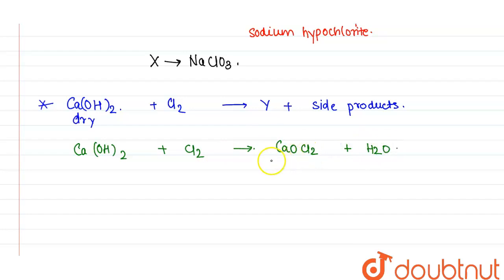This is known as calcium hypochlorite, or this is also known as bleaching powder. This is the Y product here. Y here is CaOCl2.